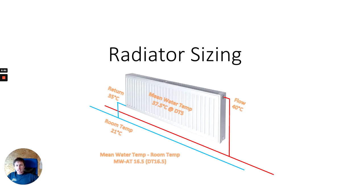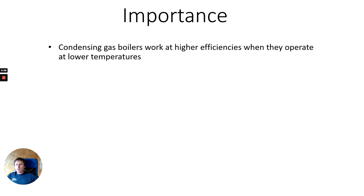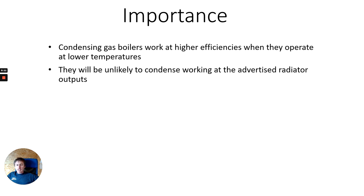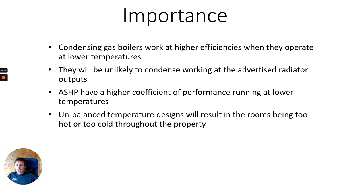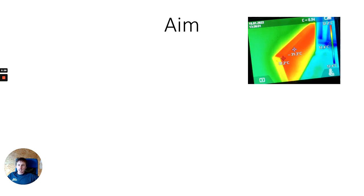Hi, thanks for tuning in for this presentation on radiator sizing. Condensing boilers work at higher efficiencies when they operate at lower temperatures, and they'll be unlikely to condense working at the advertised radiator outputs. Also, heat pumps have a higher coefficient of performance running at lower temperatures, and their COP is reduced if they're running too hot. Unbalanced temperature designs will result in rooms being too hot or too cold throughout the property.